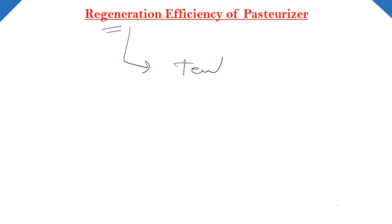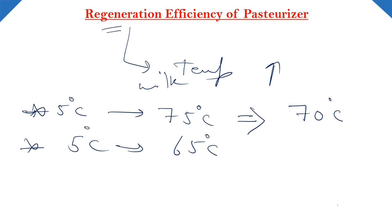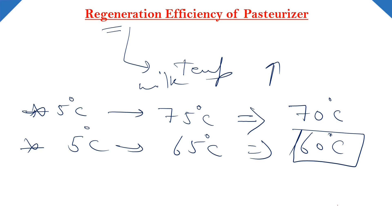Regeneration efficiency ka matlab kya hua? Ki regeneration section mein kitna milk ka temperature badha, aur kitna temperature hame actual mein badhana tha pasteurizer mein. Milk ka temperature hamara 5 degree Celsius aa raha tha, aur increase karna tha up to pasteurization temperature. So total temperature hame milk ka kitna increase karna tha - that is 75 minus 5, that is 70 degree Celsius. Lekin regeneration section ke baad hamara temperature kitna increase ho raha tha? Up to 65 degree Celsius - that means 60 degree Celsius hamara temperature sirf regeneration section mein hi increase hua.